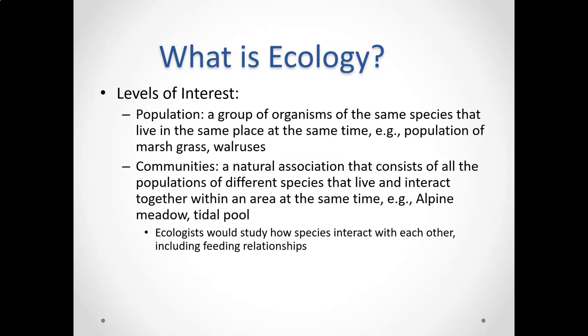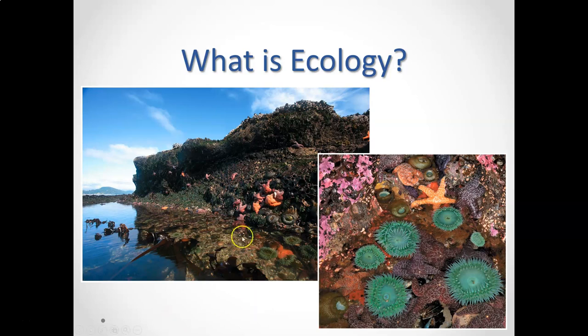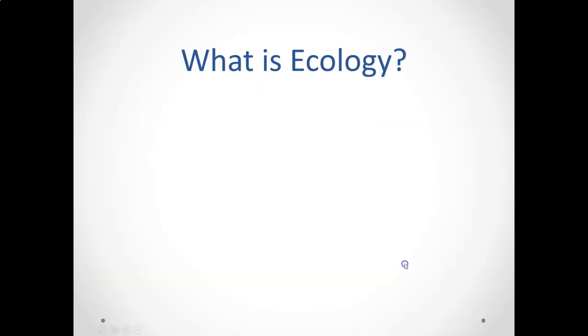We can move out from that grouping into something called a community. A community is all of the different living things that are interacting with each other in a given area — just the living things. For example, in a forest preserve in Cook County, we could look at how all the different plants and animals are interacting with each other. We could also talk about a community in a tide pool. We're just looking at how these different things are interacting with each other.